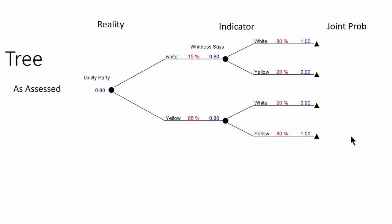So now let's calculate the joint probabilities. The joint probabilities are multiplying these probabilities together. So the first one is 15% times 80 gives 12%. The second is 15 times 20 gives 3%. And then the last two are calculated in a similar manner.